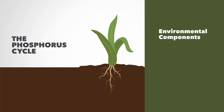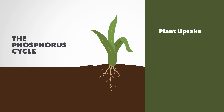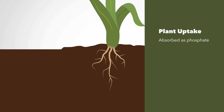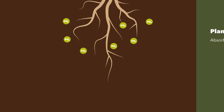Phosphorus components of the environment are the transformations of forms within the cycle, including organic phosphorus, soluble phosphorus, primary minerals, mineral surfaces, and secondary compounds. Plant uptake is when the plant's roots absorb the phosphorus as phosphate from the soil.